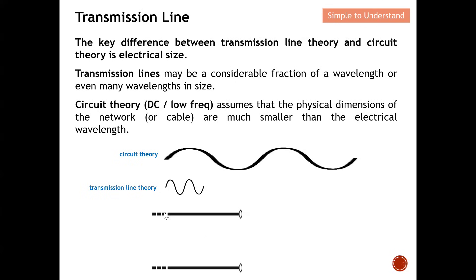Because of high frequency, the wavelength is relatively short, so the length of the transmission line can be equivalent to a few wavelengths of the signal. The transmission line may be a considerable fraction of a wavelength or even many wavelengths in size. In contrast, circuit theory is mainly for DC or low frequency — it assumes that the physical dimensions of the network are much smaller compared to the electrical wavelength.